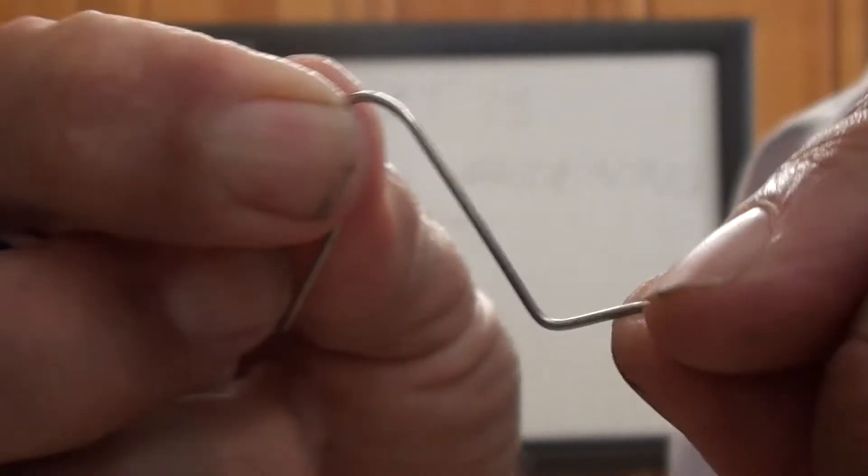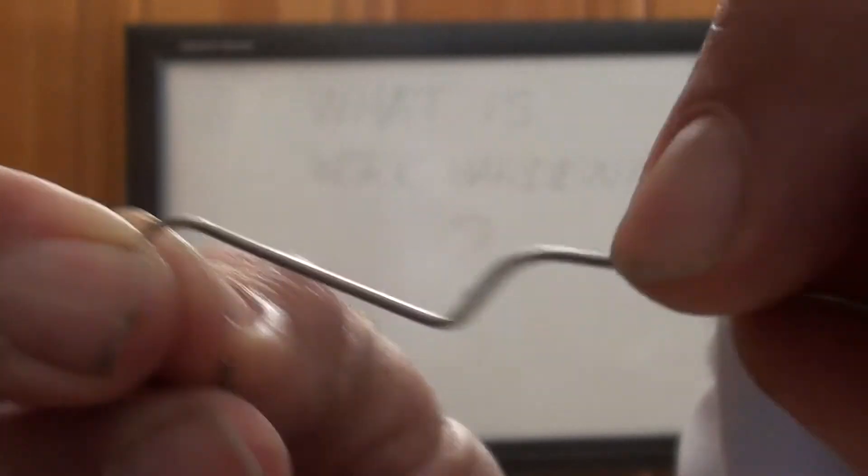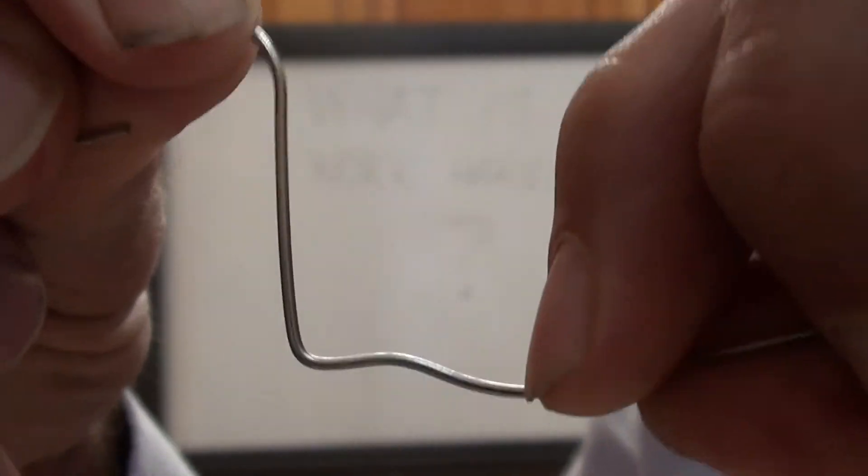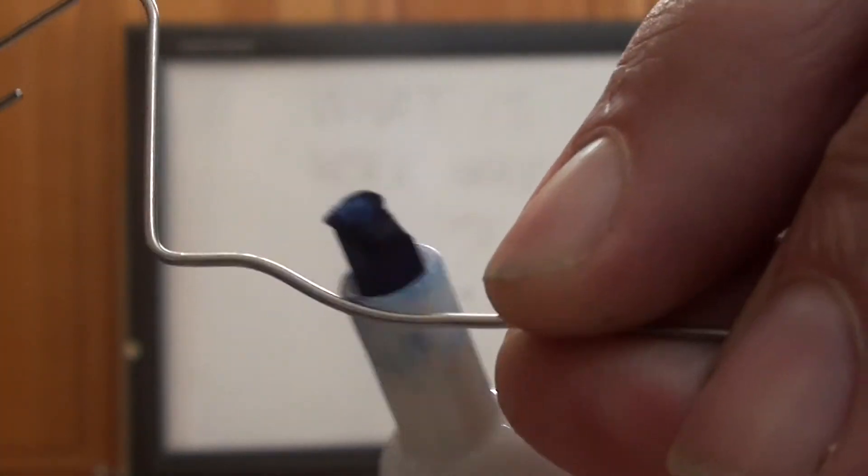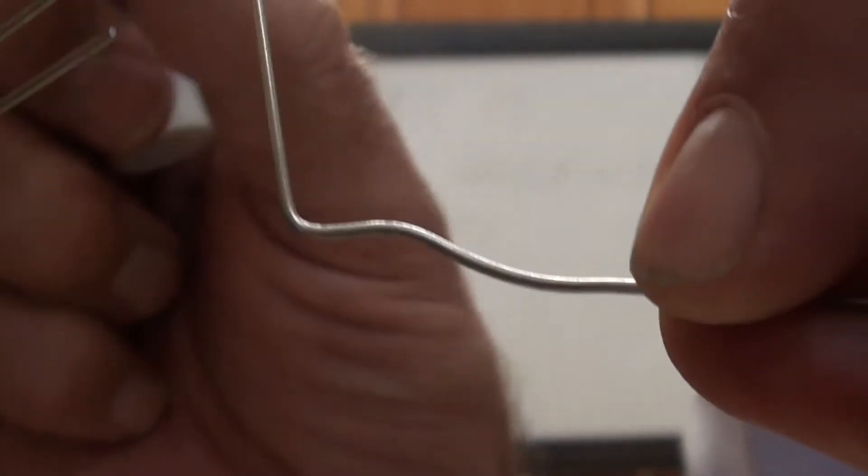So when I bend that, it's bending there. When I bend it back up again, it's bending down here. So I've got one, two, three points where it's strengthened.